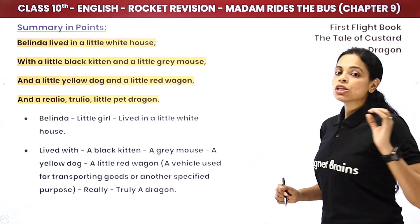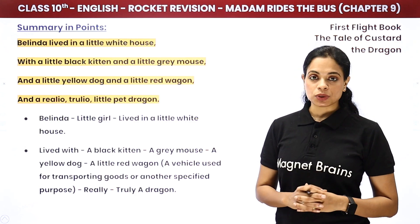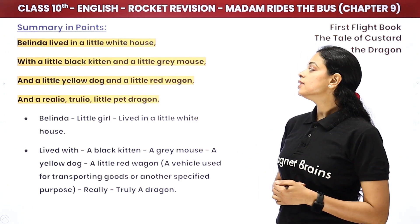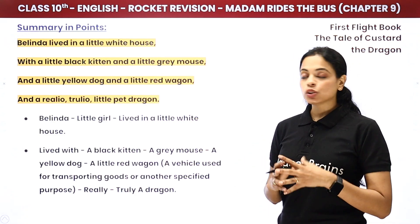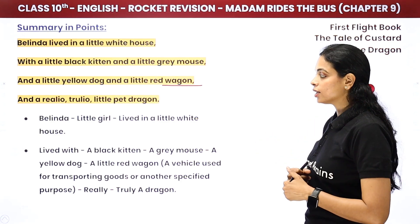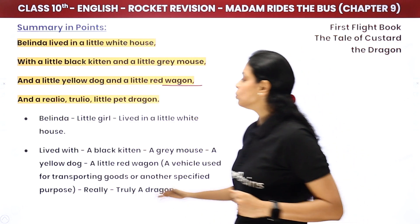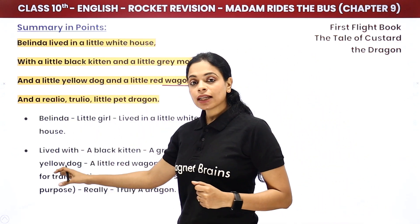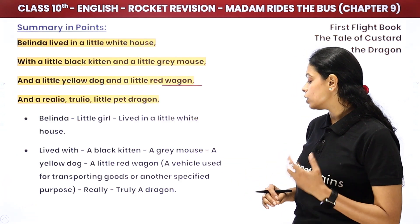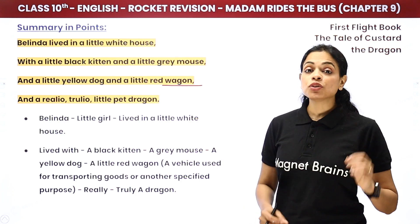Belinda lived in a little white house with a little black kitten and a little grey mouse, and a little yellow dog and a little red wagon. A wagon is a vehicle used for transporting goods or for another specified purpose. And really, truly, she had a little pet dragon too.